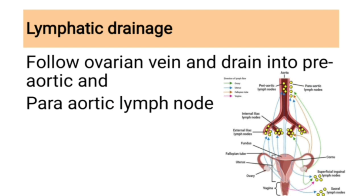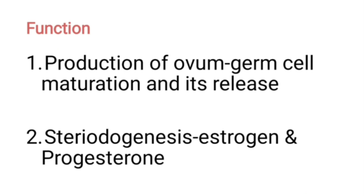Lymphatic drainage follows the ovarian vein and drains into the preaortic and periaortic group of lymph nodes. The function of the ovary is very important for maintaining reproduction in females. Its main function is production of ova — it causes maturation of germ cells, releases them during ovulation, and helps in fertilization.